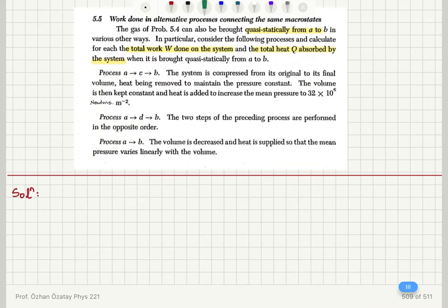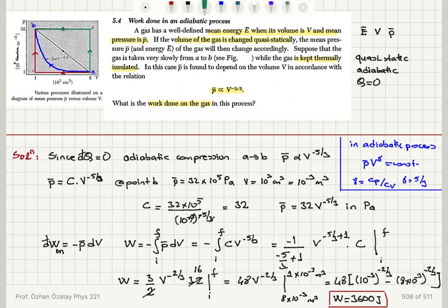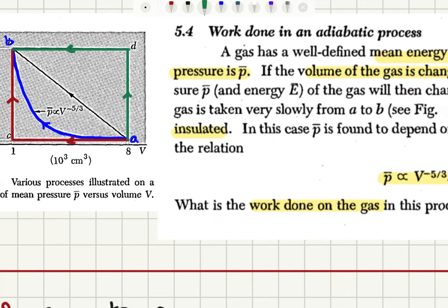For the direct path A to B, the volume is decreased and heat is supplied so that the mean pressure varies linearly with the volume. This is shown with black and is the third possibility.